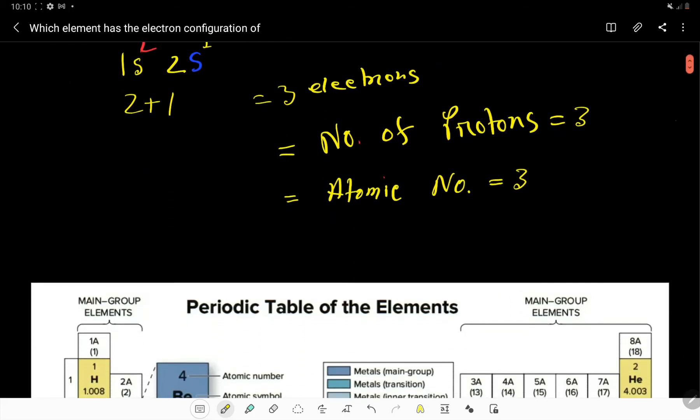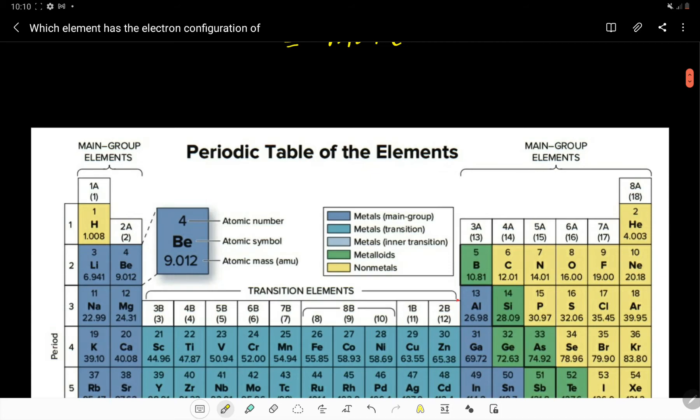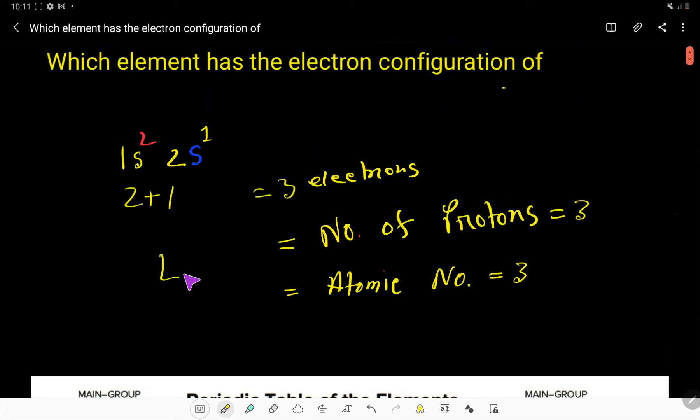We see that lithium has atomic number three. Lithium is the element of group one or 1A. This is lithium element's electronic configuration.